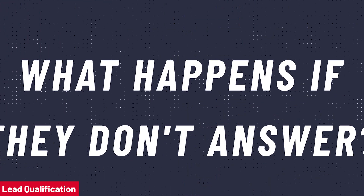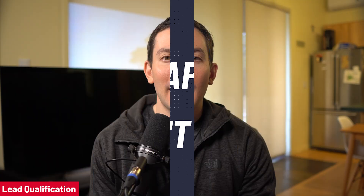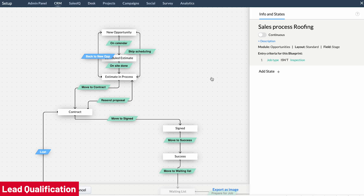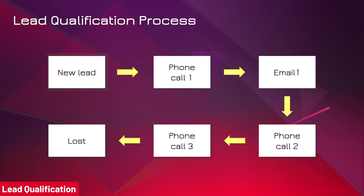But what happens if the lead doesn't get back to us? That's when having a process comes in handy. Some CRMs allow you to create blueprints where you can map out your process so the sales reps have to follow it. For example, your process could be: when a lead is assigned, contact by phone. If no answer, email her. Then wait one day and contact by phone again. Finally, wait three days, contact by phone again, and if no answer, lose the lead.